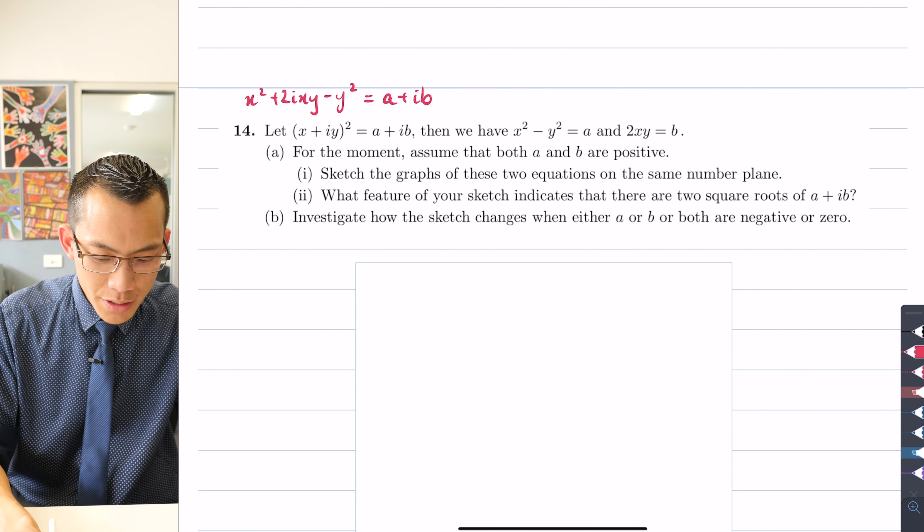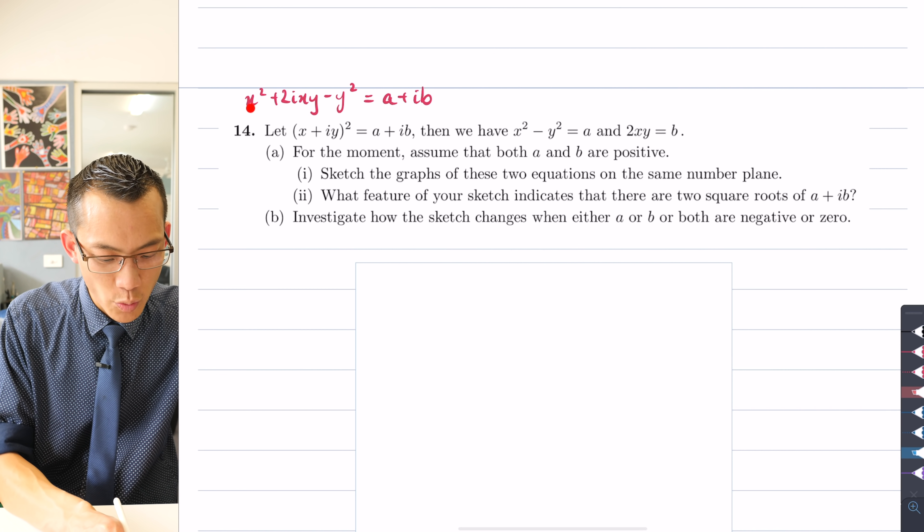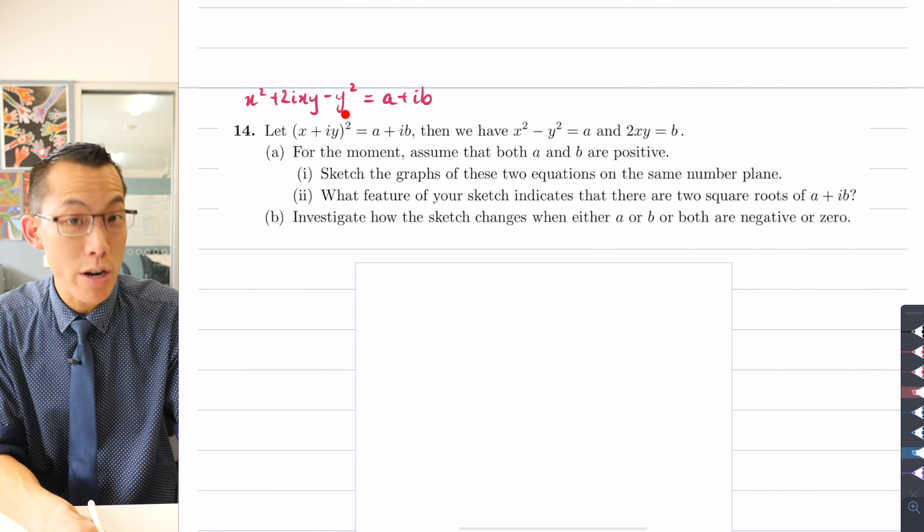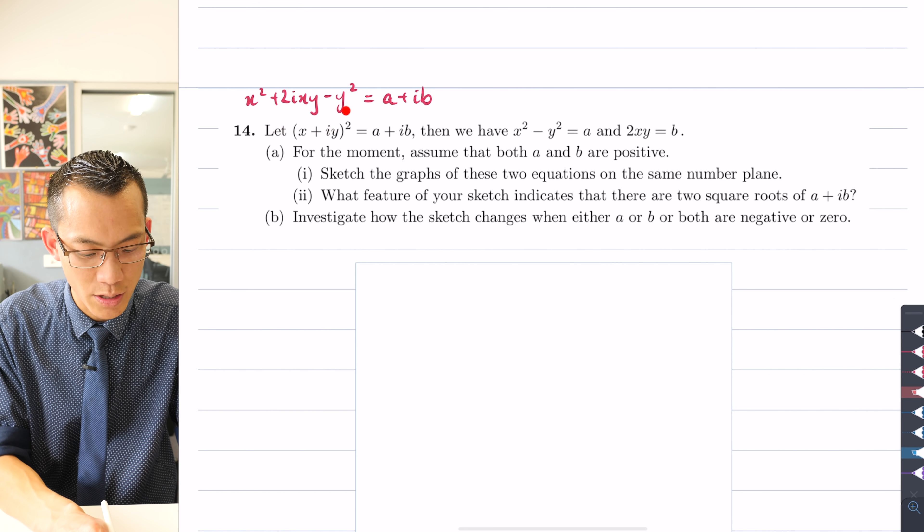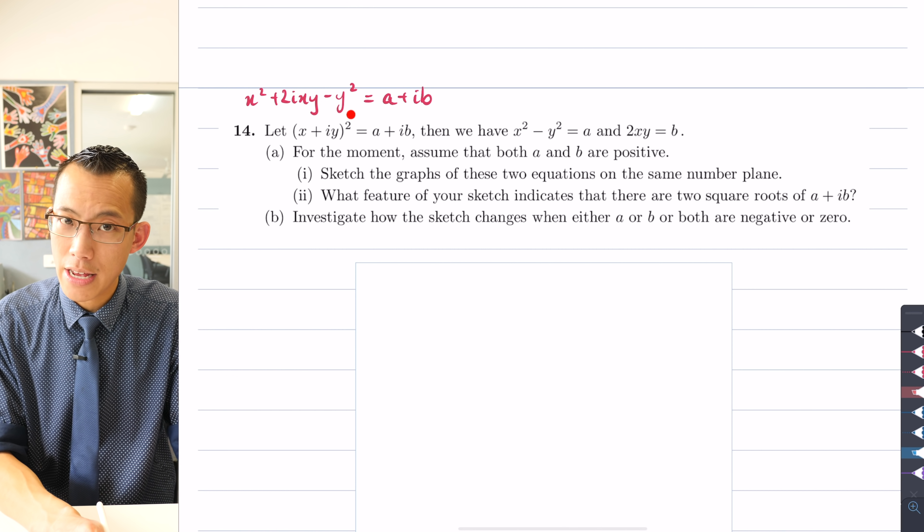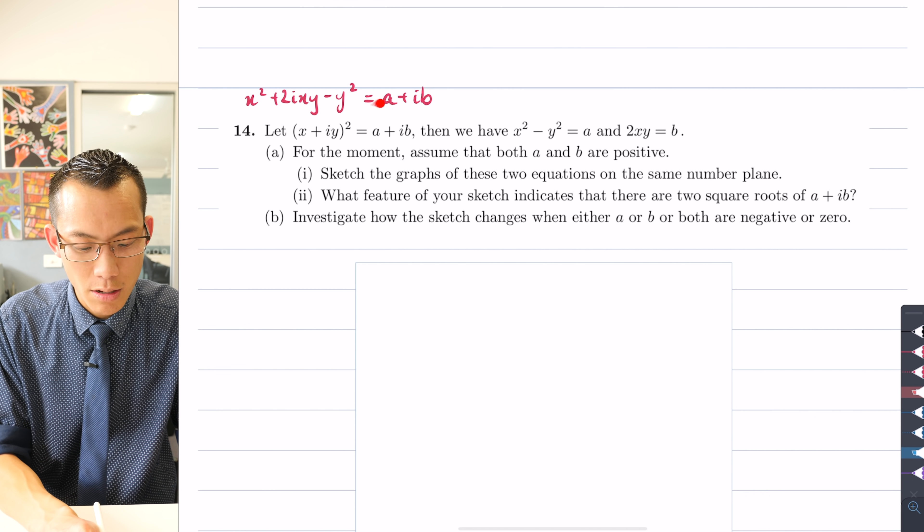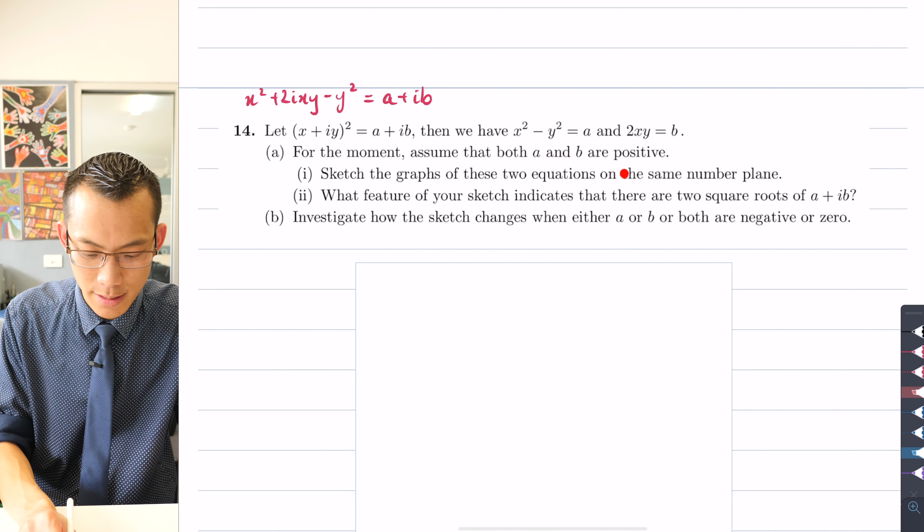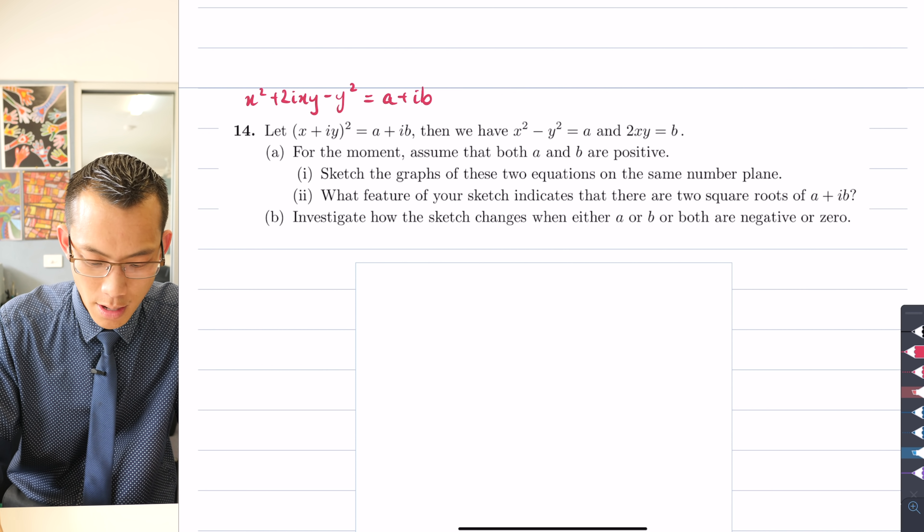Now what you should see here is that x squared minus y squared is the real component—there are no i's attached to it. So x squared minus y squared, the real component on the left-hand side, must be equivalent to the real component on the right-hand side, and that's what's written here.